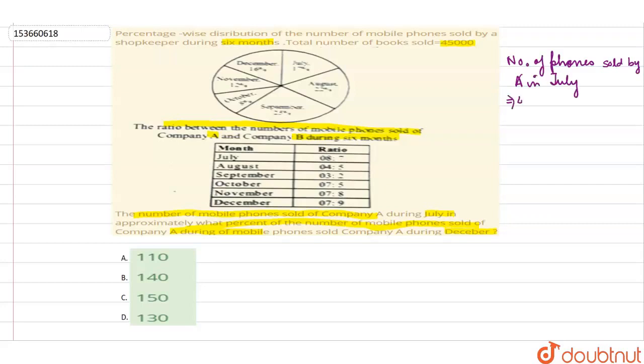So total number of mobile phones is 45,000. Percentage for July was 17%. And company A to B ratio for July was 8 is to 7. So we will do 8 by 8 plus 7, that is 15.